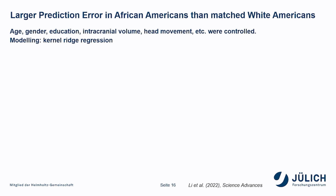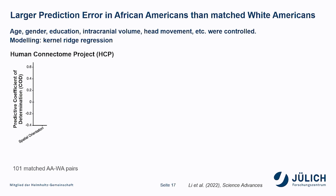We built kernel ridge regression models to predict behavioral phenotypes from resting-state functional connectivity of individual brains. We trained and tested our predictive models in a cross-validated way. For each cross-validation, we trained the model based on a mixture of ethnic groups, following how it is usually done in the field, and we tested the models on white Americans and African Americans matched in terms of certain demographic, anthropological, and behavioral variables.